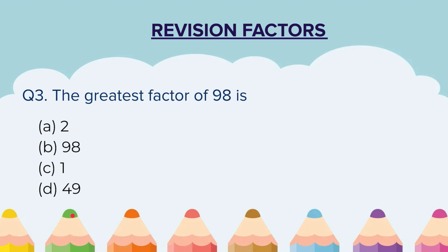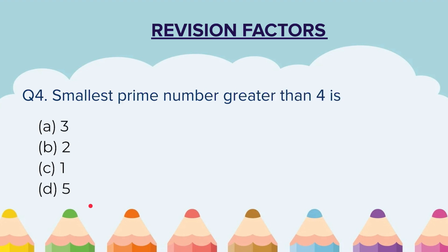Question 3: The greatest factor of 98 is — a) 2, b) 98, c) 1, d) 49. Again, you have to select the correct answer out of the 4 options given.